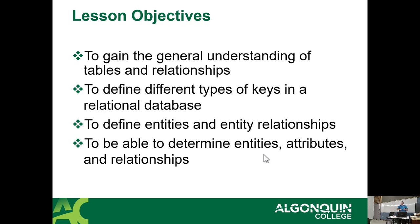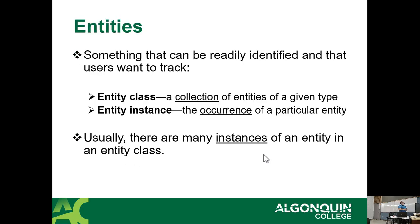There are basically two parts to this lecture. One is we're going to be talking about what's happening in the database server, and the other part is where does it actually come from in the outside world? In the outside world, we have a thing called entities. Before we create databases and tables, we need to understand what the data is, and one of the very important items is entities. An entity is something that can be readily identified and that wants to be tracked by a user or company.